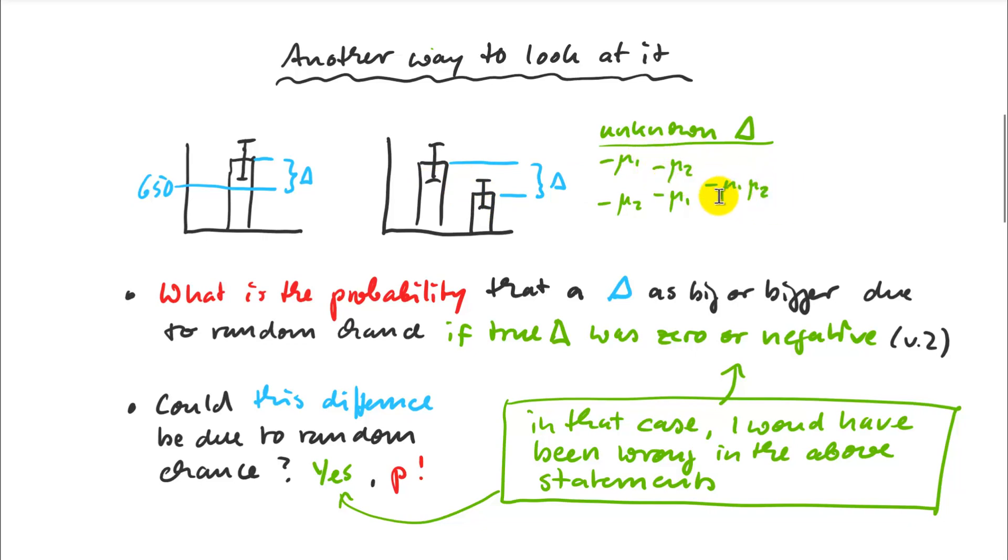Or it could also be that they are the same. If I have some sort of treatment that has absolutely zero effect, I'm essentially sampling from the same population. So that is theoretically also possible in some cases. So one way I can rephrase my statistical statements from the one-sample t-test is, what's the probability that that delta that I observe in my one-sample or two-sample t-test, what's the probability that that difference is as big or bigger just by random chance? So if the true mean was zero or even the other way around? Or slightly simpler put, could this difference that I observe, could this be due to random chance? And the answer is yes, it always can. And the probability is p. That's what p really means.